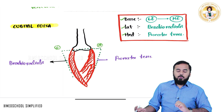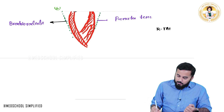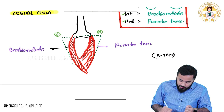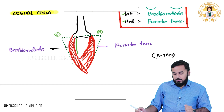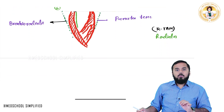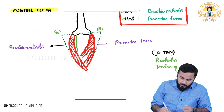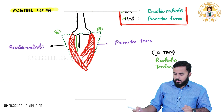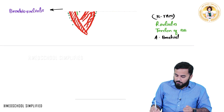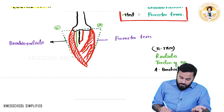Now for the contents of the cubital fossa, remember the mnemonic RTAN from lateral to medial. R stands for radial nerve — here we have a nerve called the radial nerve. T stands for tendon of biceps brachii — in the center we have the tendon of biceps brachii. A stands for artery — the brachial artery, which divides into the radial artery and the ulnar artery.